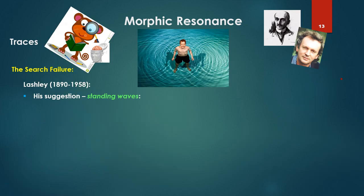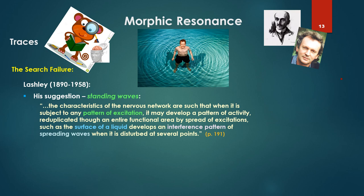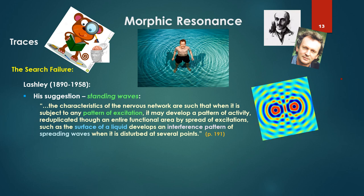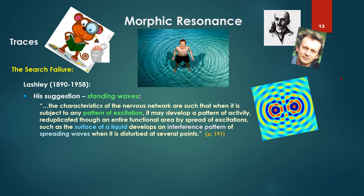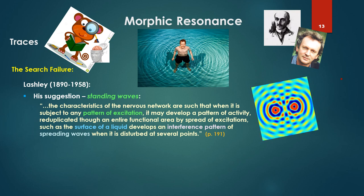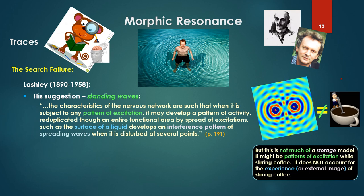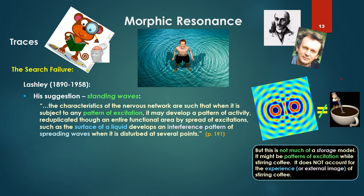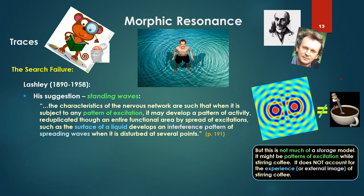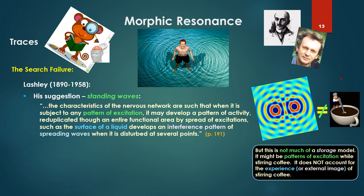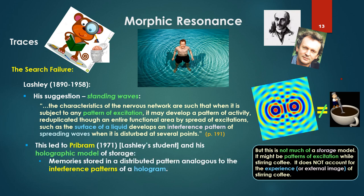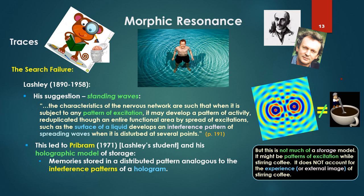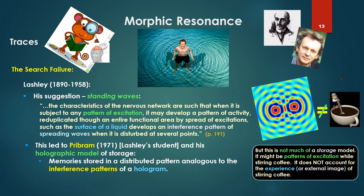Lashley's suggestion was standing waves. To quote: the characteristics of the nervous network are such that when it is subject to any pattern of excitation, it may develop a pattern of activity reduplicated through an entire functional area by spread of excitations, such as the surface of a liquid develops an interference pattern of spreading waves when disturbed at several points. I would note this is not much of a storage of experience — it might be patterns of excitation, but it does not account for the experience of, say, stirring coffee. But this led to Pribram, his Lashley student, and his holographic model of storage — memory stored in a distributed pattern analogous to the interference patterns of a hologram.